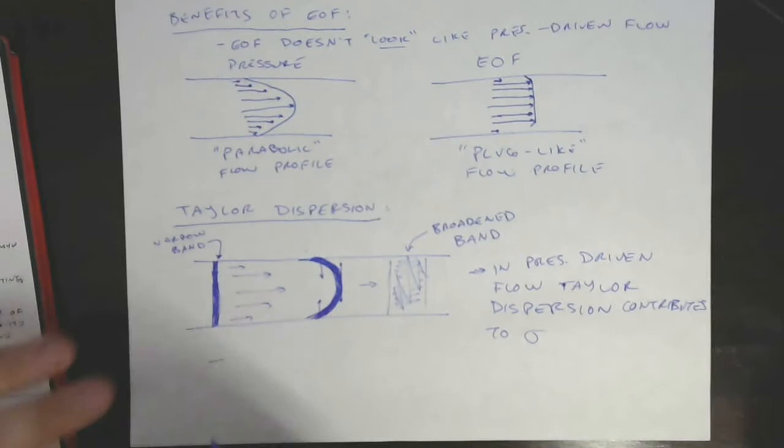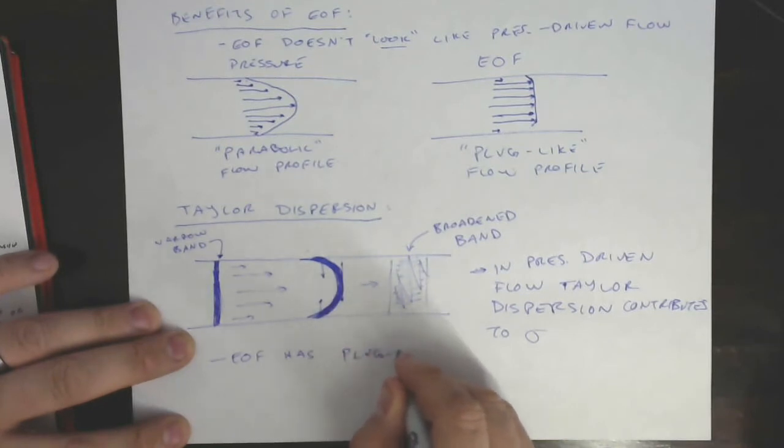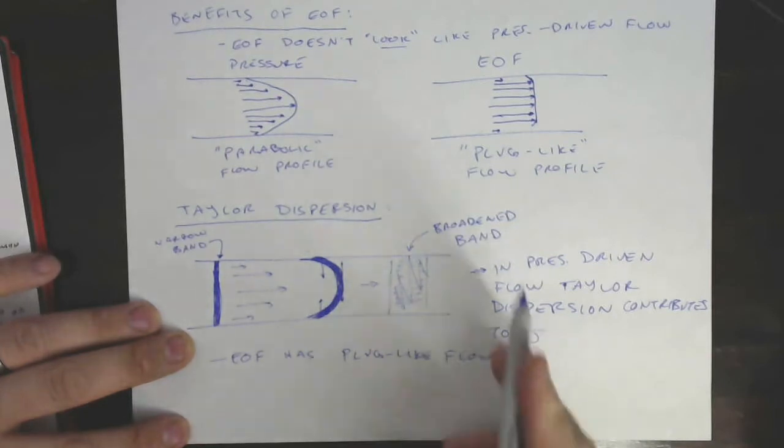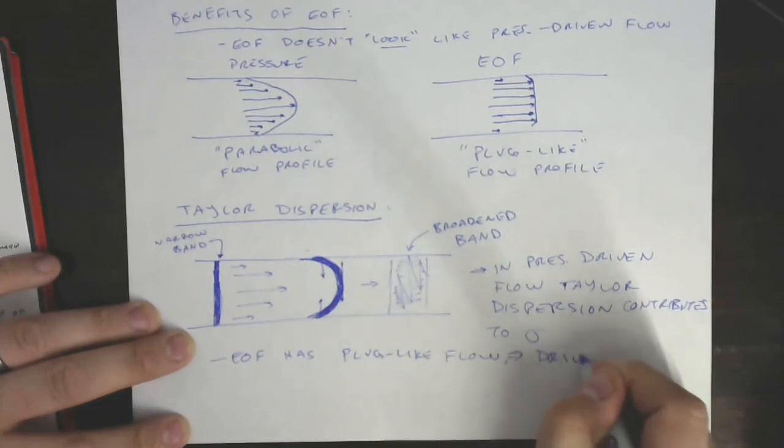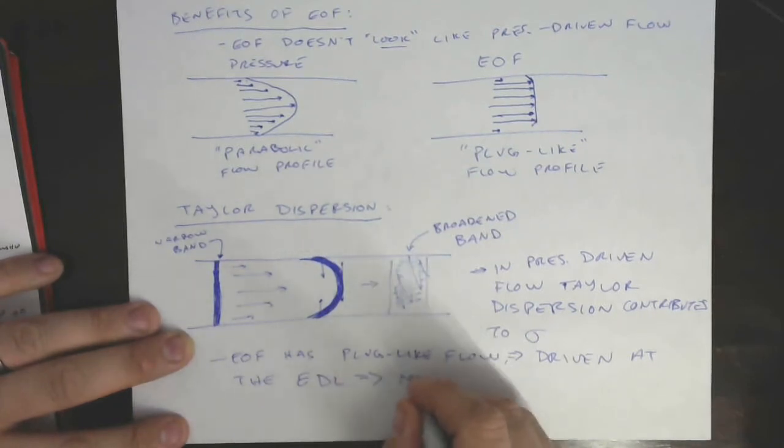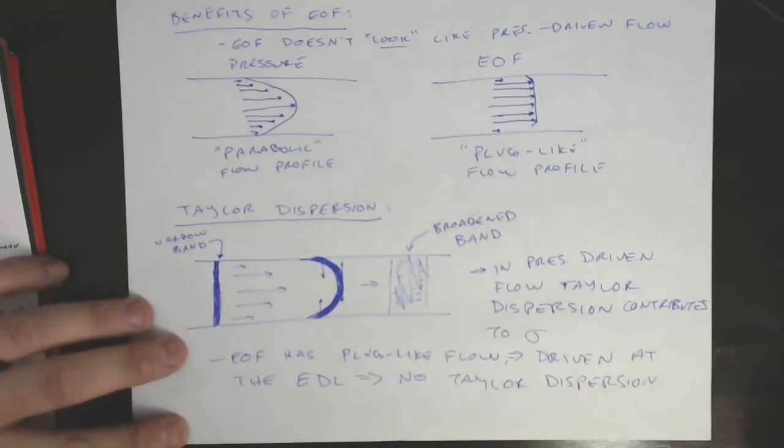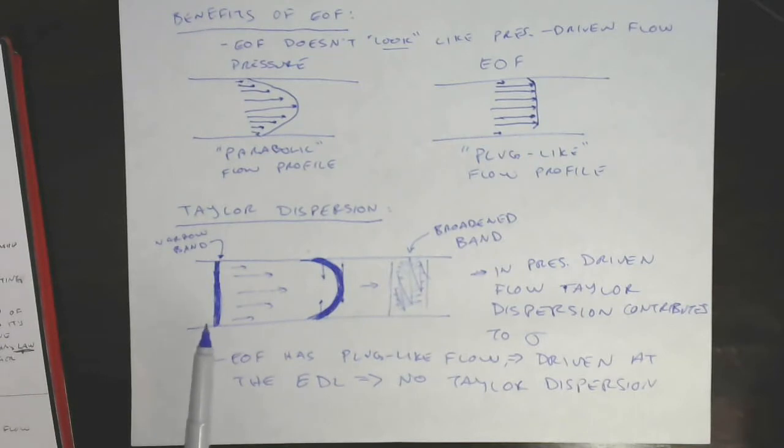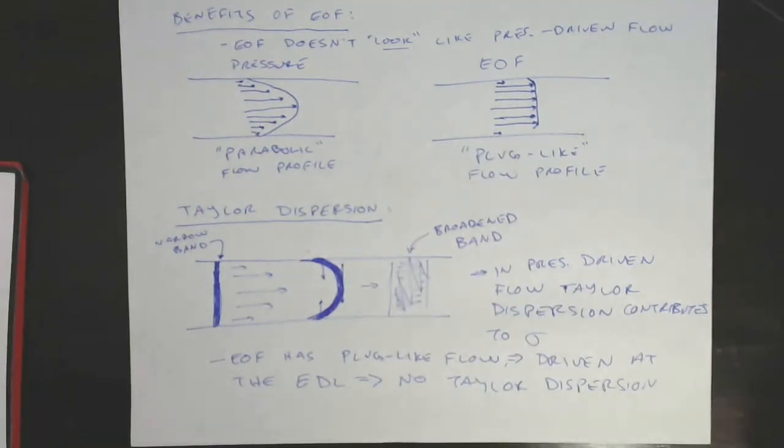But in EOF, we have this plug-like flow because flow is driven starting at the wall where the electric double layer exists, and therefore no Taylor dispersion. So we've seen faster is better because we avoid longitudinal diffusion. Actually we also avoid this major mechanism of radial diffusion that adds to band broadening, so another way in which EOF is benefiting us in capillary electrophoresis.